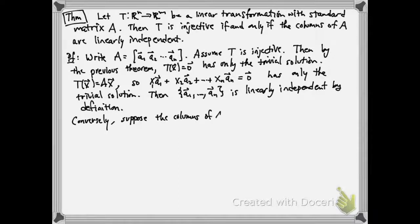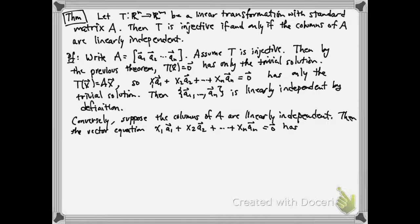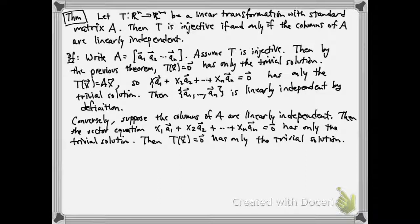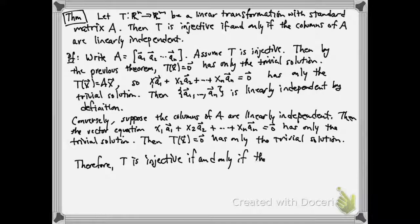Now, conversely, suppose the columns of A are linearly independent. Then the vector equation X1 A1 plus X2 A2 all the way up to Xn An equals zero has only the trivial solution by definition. But that's exactly T of X. And so this is saying precisely that T of X equals zero has only the trivial solution. And therefore, T is injective if and only if the columns of the standard matrix of T are linearly independent.